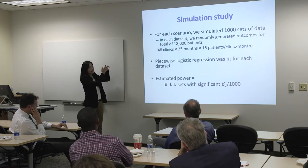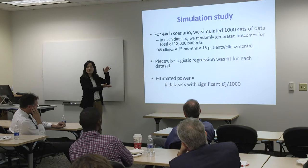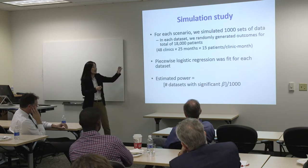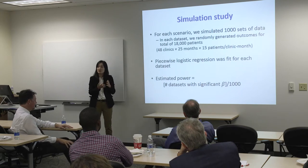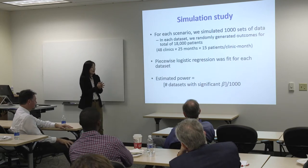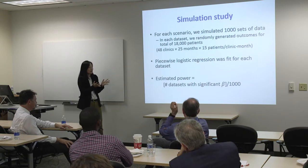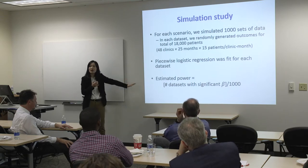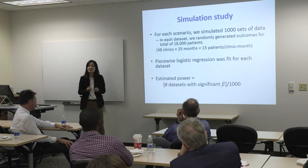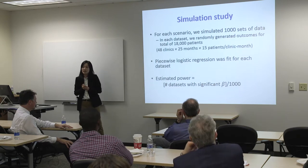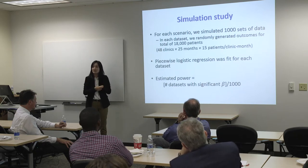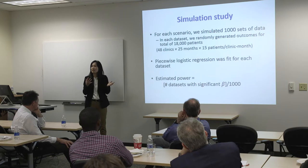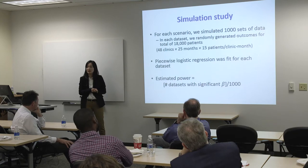After generating the 1,000 data sets, for each data set I fit the piecewise logistic regression model that I was going to fit in the trial. Then I counted the number of data sets that gave me a significant p-value for that intervention effect, and divided by 1,000 — that's basically the power: how likely are you going to detect a significant effect when there is one.